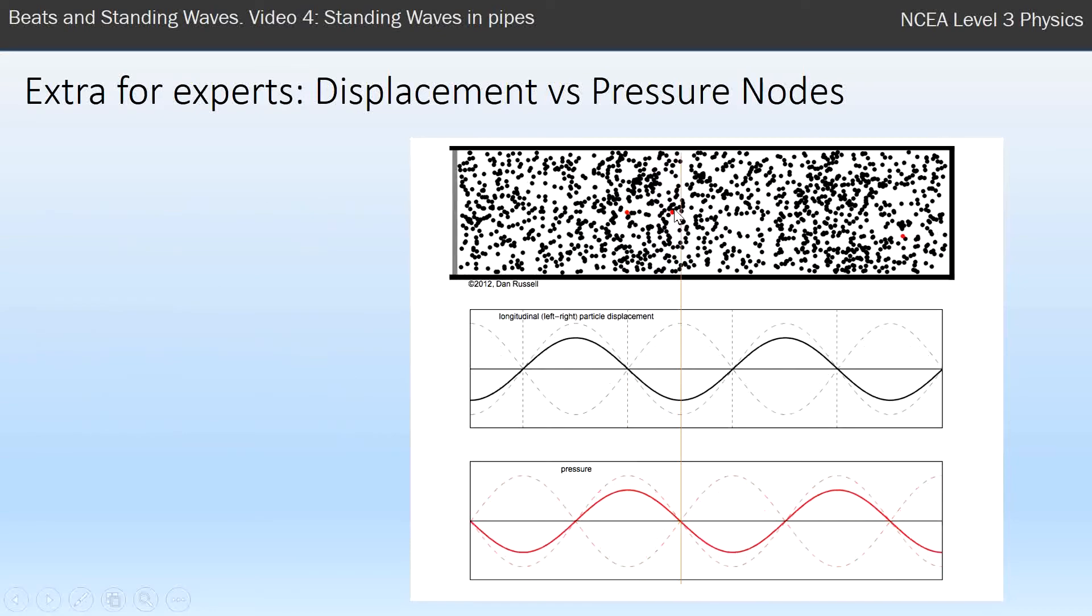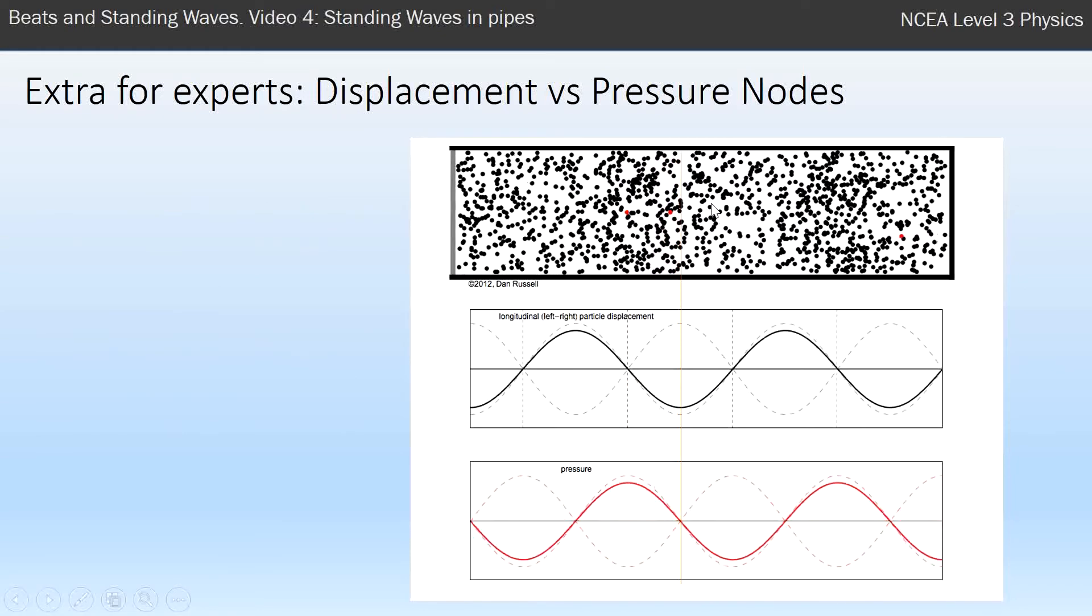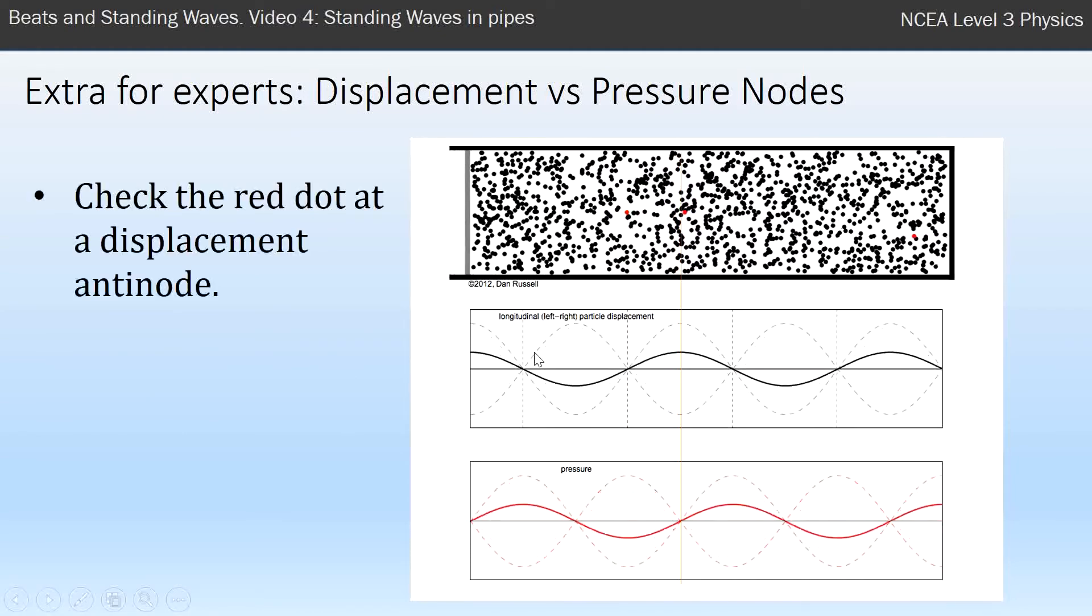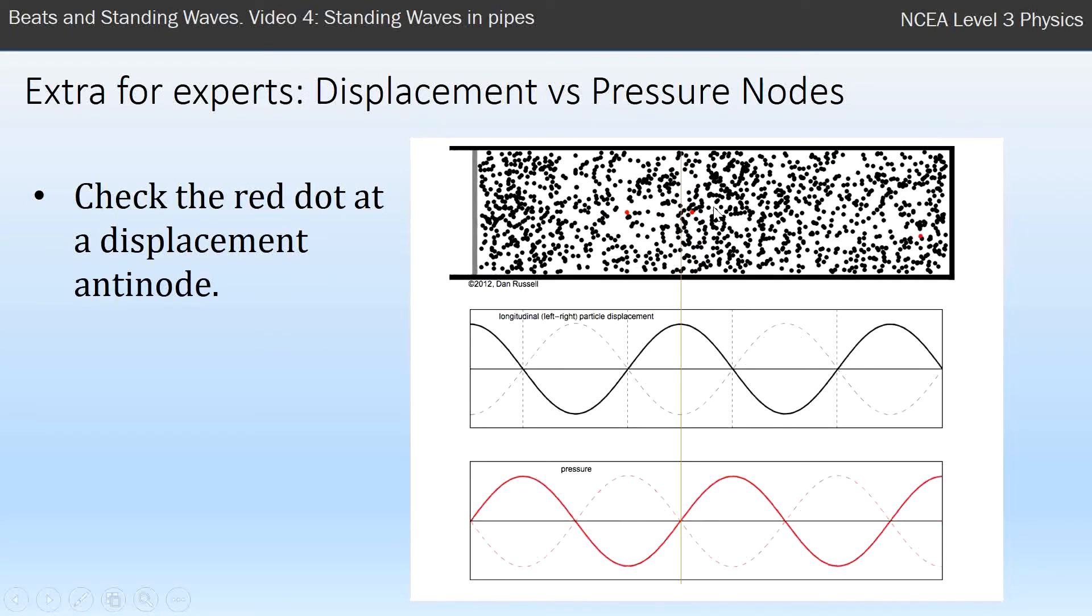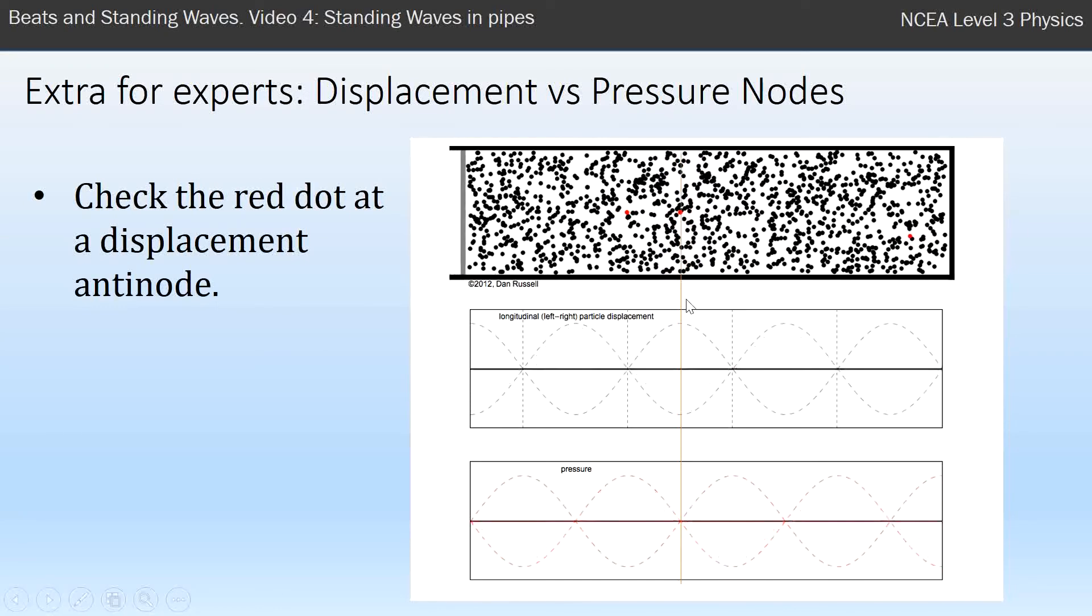Let's look at this red one here, which is moving a lot. I've got the red line here to help you see where it is. It's a displacement anti-node. It's moving a lot, so it's an anti-node.